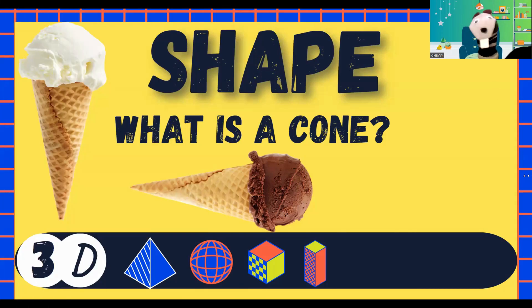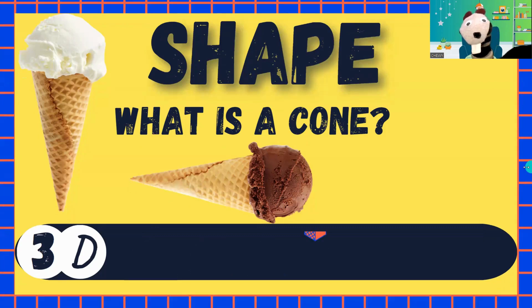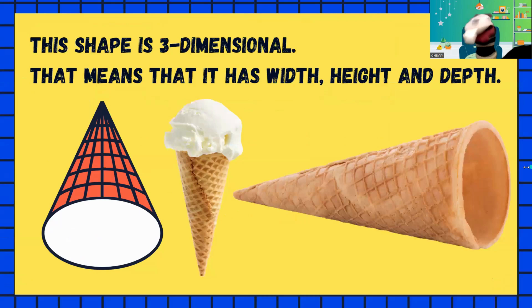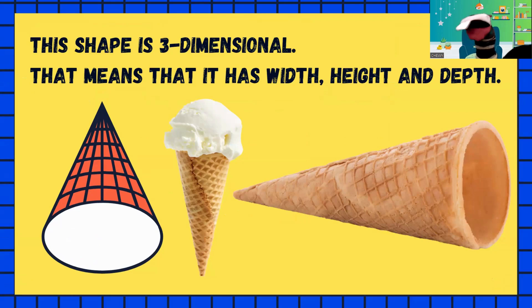Alright, here's our first shape. What is a cone? Oh, that ice cream looks yummy. Guess what? This shape is three-dimensional. You know what that means?